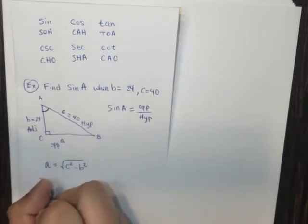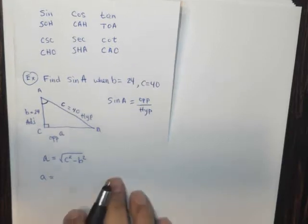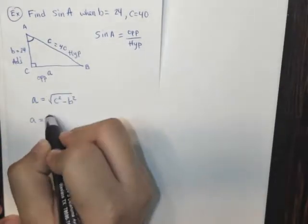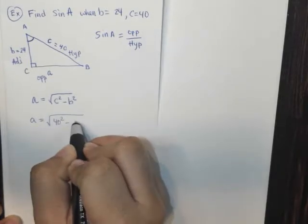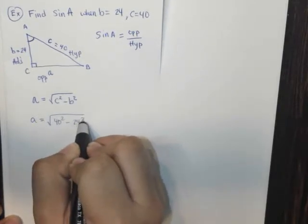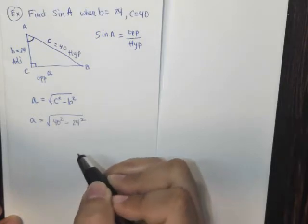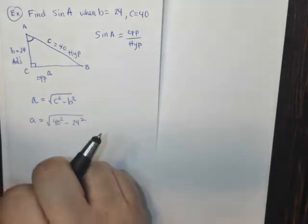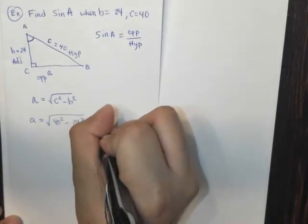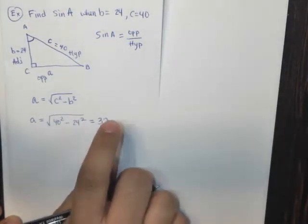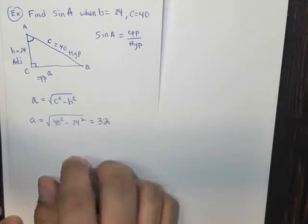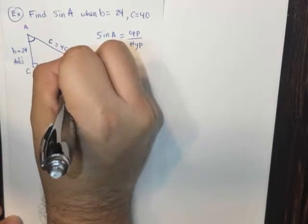So let's plug that information in. So A is going to equal, in this case, the square root of 40 squared minus 24 squared. I'll let you go ahead and do that in your calculator, but it's really simple. You're going to end up getting that the answer, the square root of whatever this is, happens to be 32. So in other words, this is 32 right here.